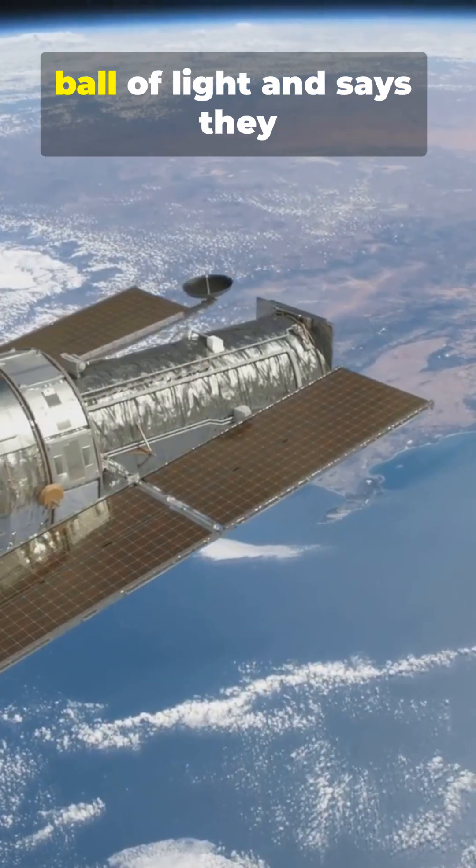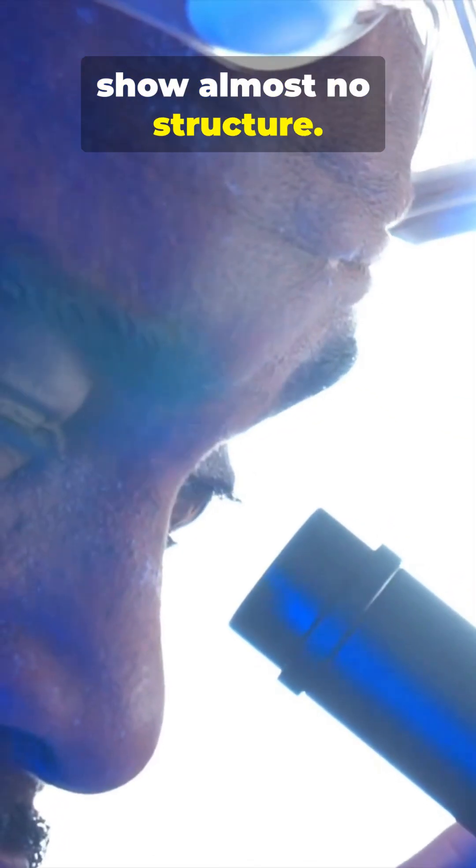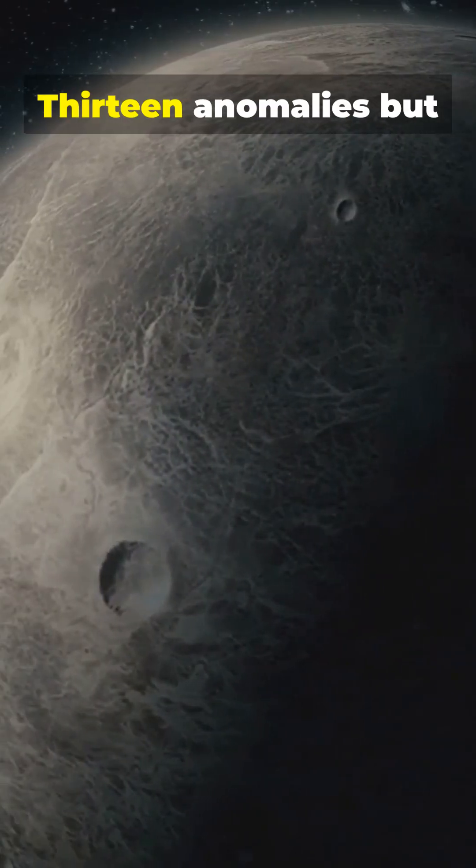Loeb calls the images a fuzzy ball of light and says they show almost no structure. His biggest point? 13 anomalies, but especially the 13th.